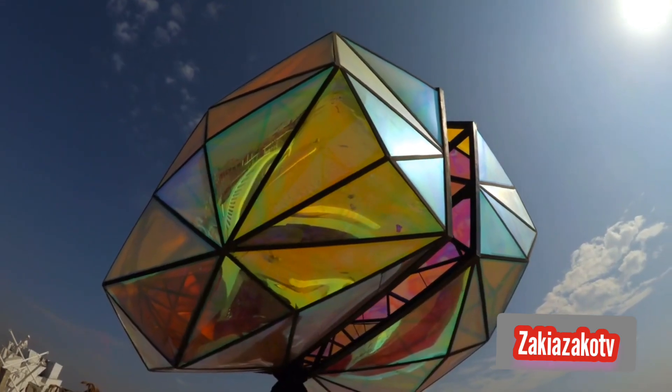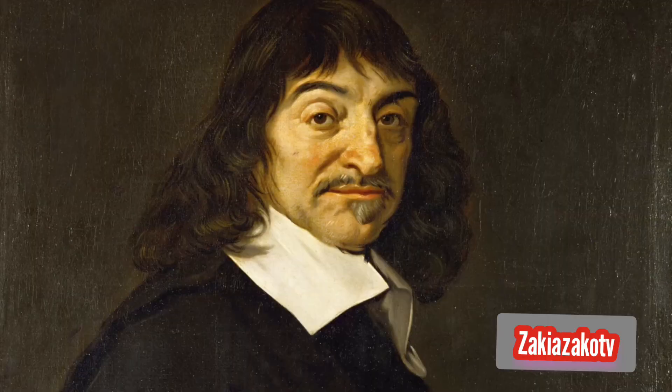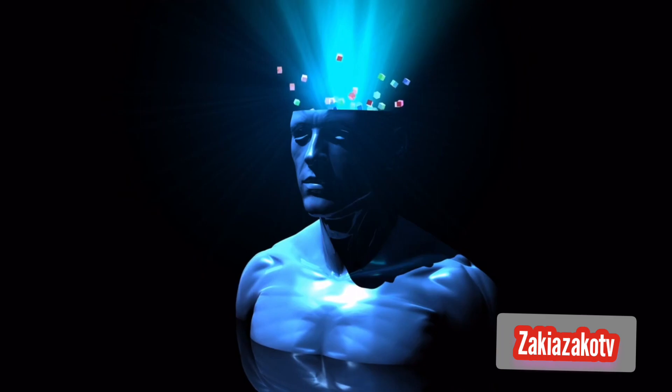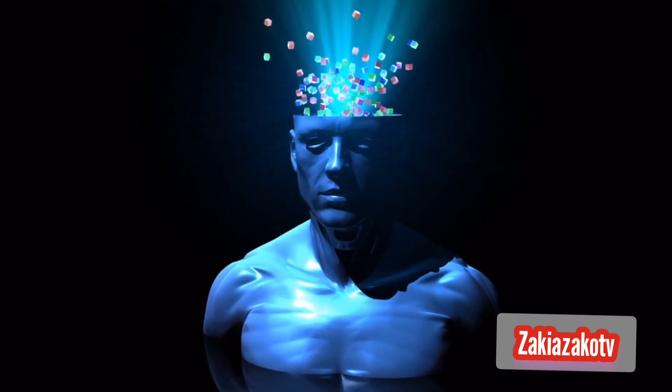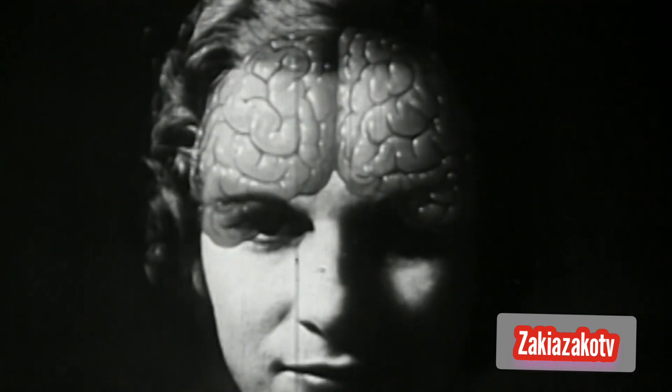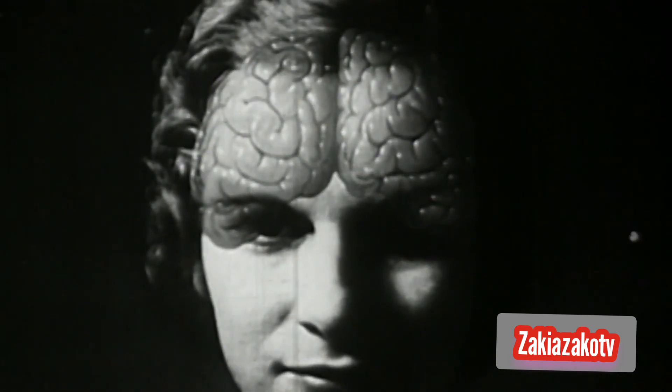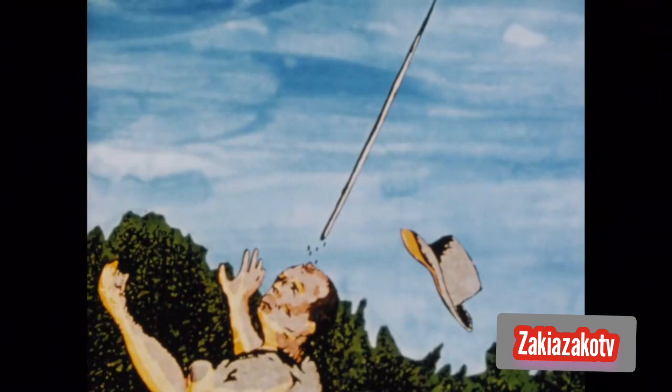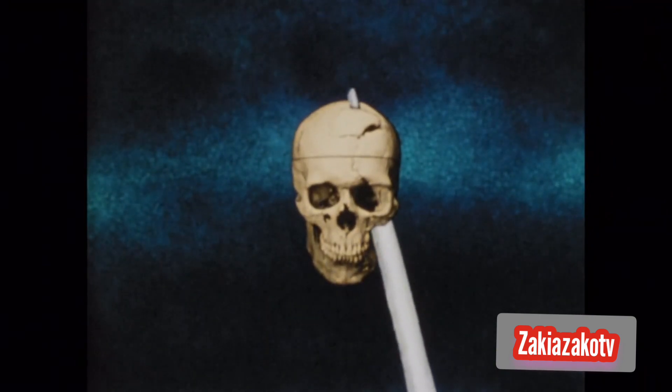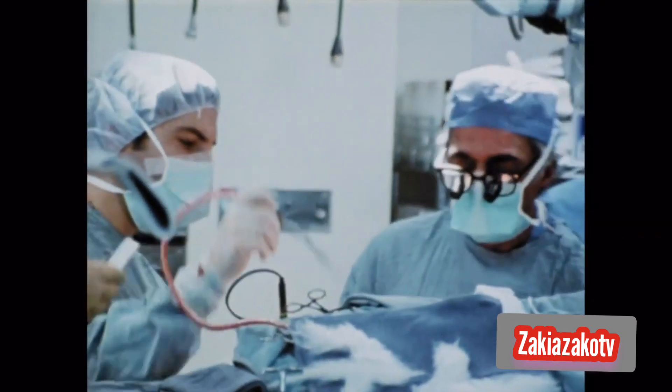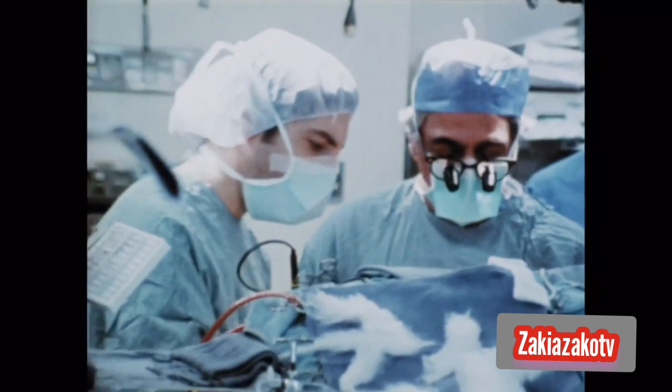However, that perspective began to change in the 17th century, as thinkers like Rene Descartes began to struggle with the relationship between the mind and the brain. In the 18th century, physicians and physiologists started to uncover the importance of the brain in how we think. One of the most famous cases during this time was that of Phineas Gage, a railroad worker whose accidental frontal lobotomy in 1848 dramatically changed his personality.